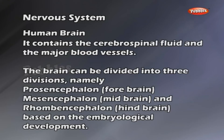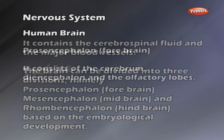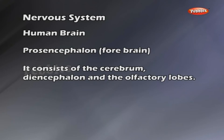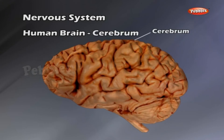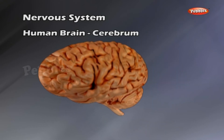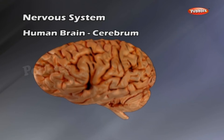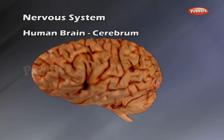Prosencephalon, forebrain: It consists of the cerebrum, diencephalon and the olfactory lobes. Cerebrum is the largest part of the brain. It is divided into the right and left cerebral hemispheres by a median longitudinal fissure. But at the base, they are interconnected by a sheet of nerve fibers called corpus callosum. The outer surface of the cerebrum is called the cortex. This is made up of gray matter and is composed of the cytons of the neurons. The inner part is the white matter.